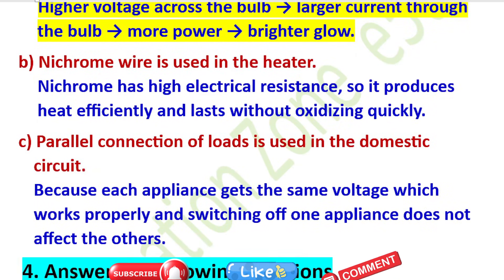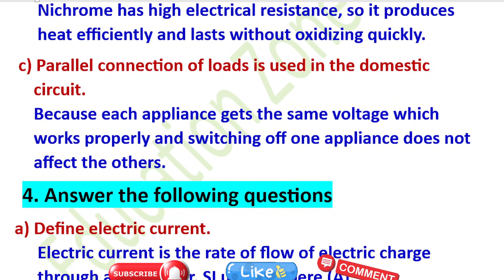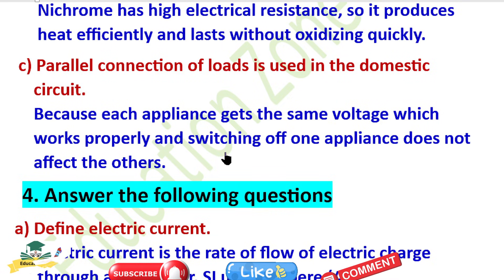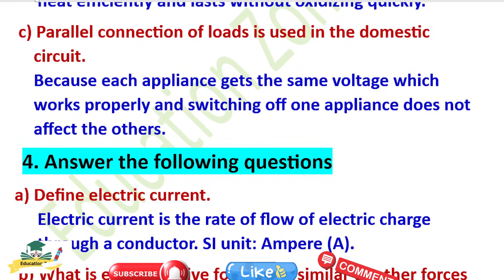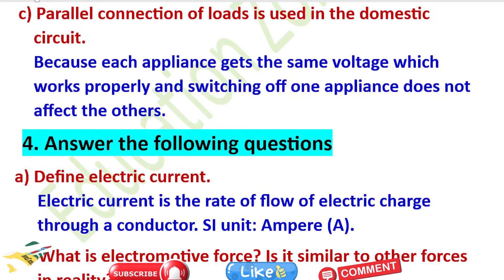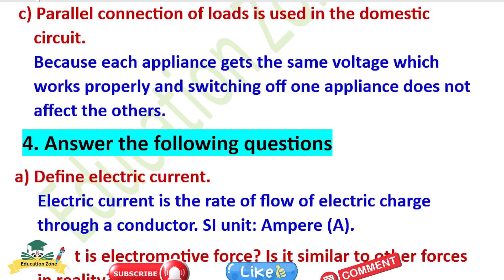Parallel connection of loads is used in the domestic circuit because each appliance gets the same voltage and works properly, and switching off one appliance does not affect the others — for example, the iron and rice cooker can work independently. That is why our home connection uses parallel.